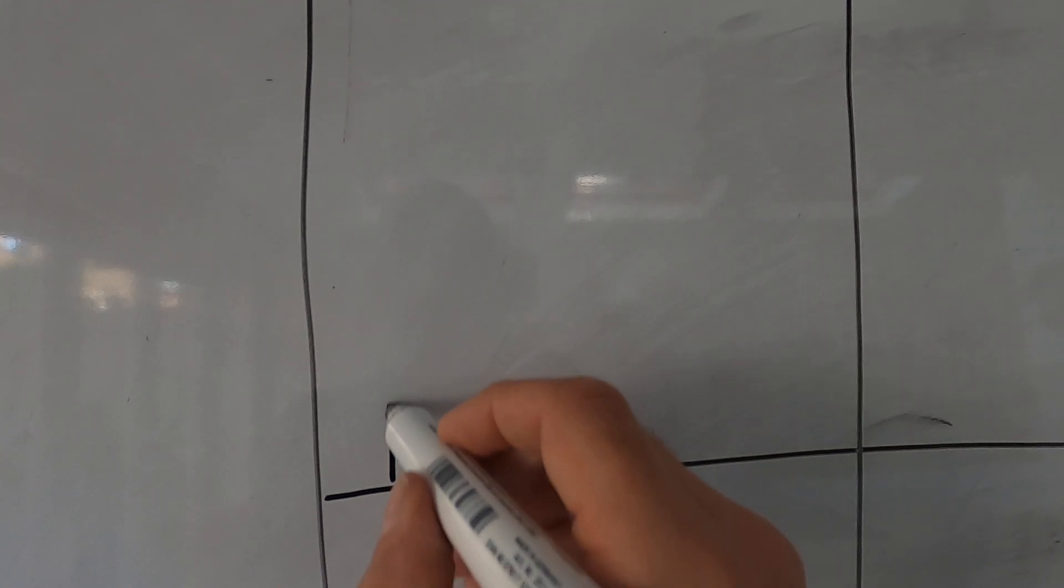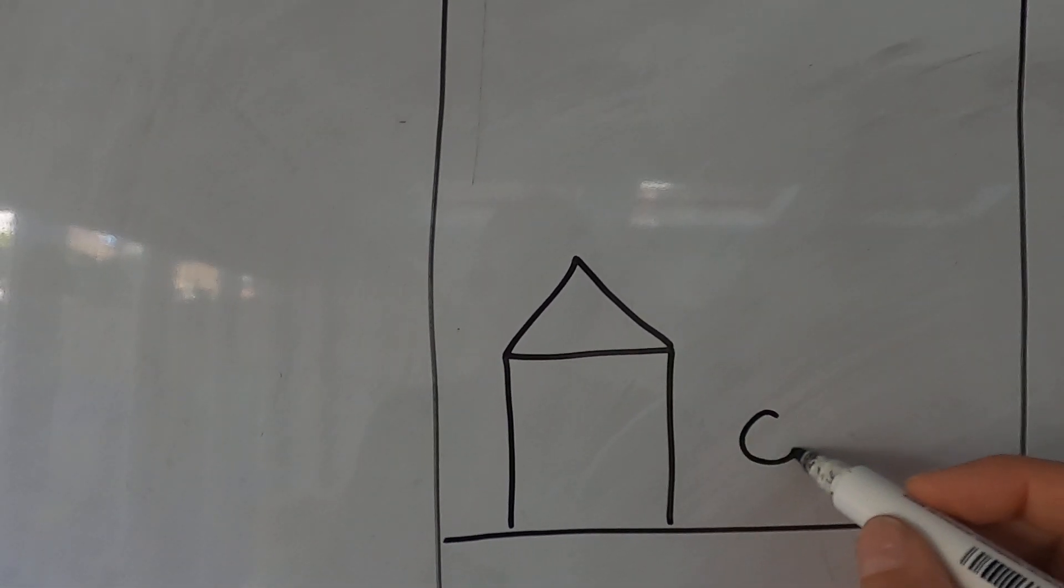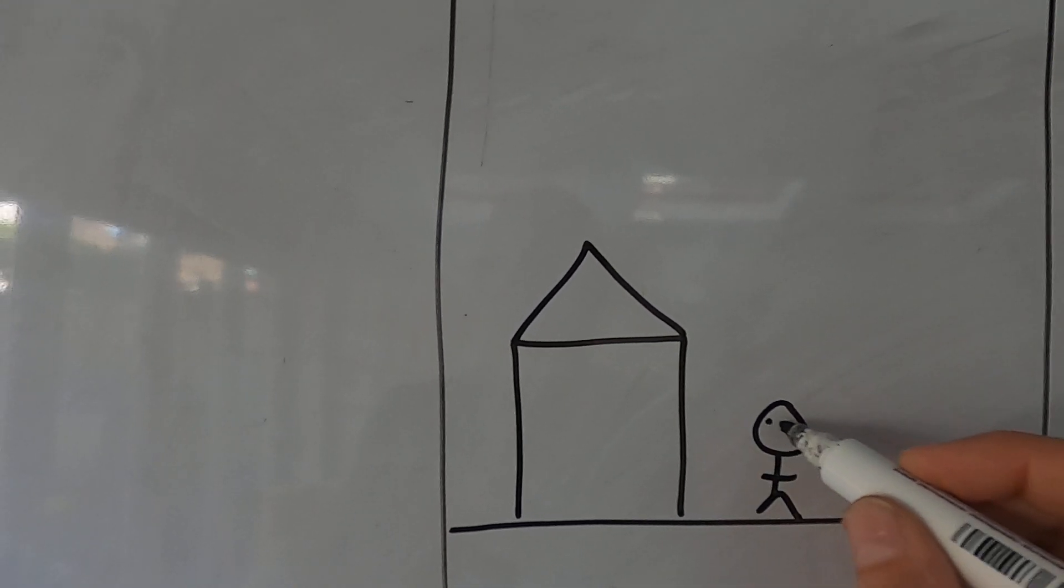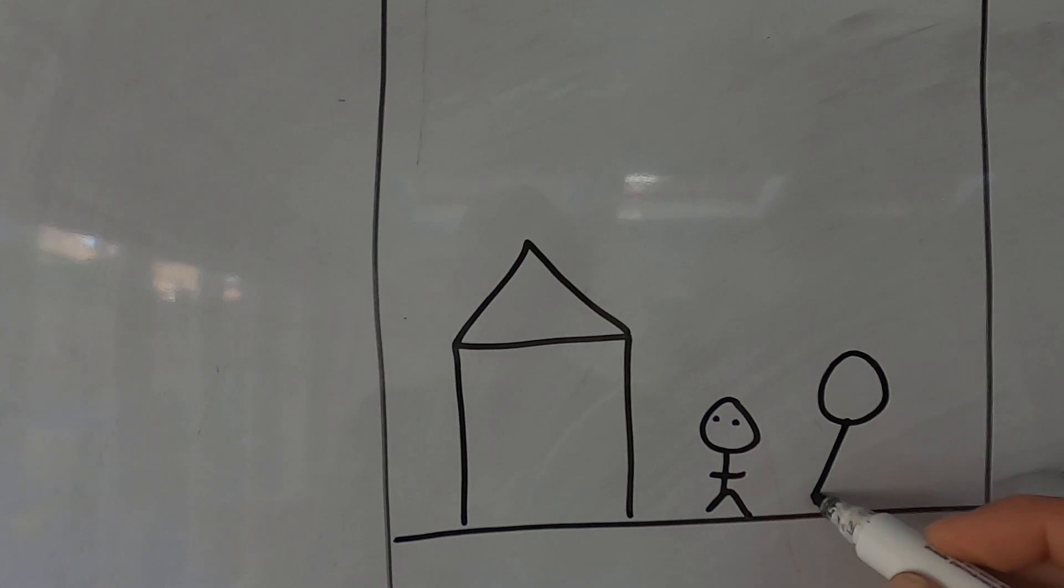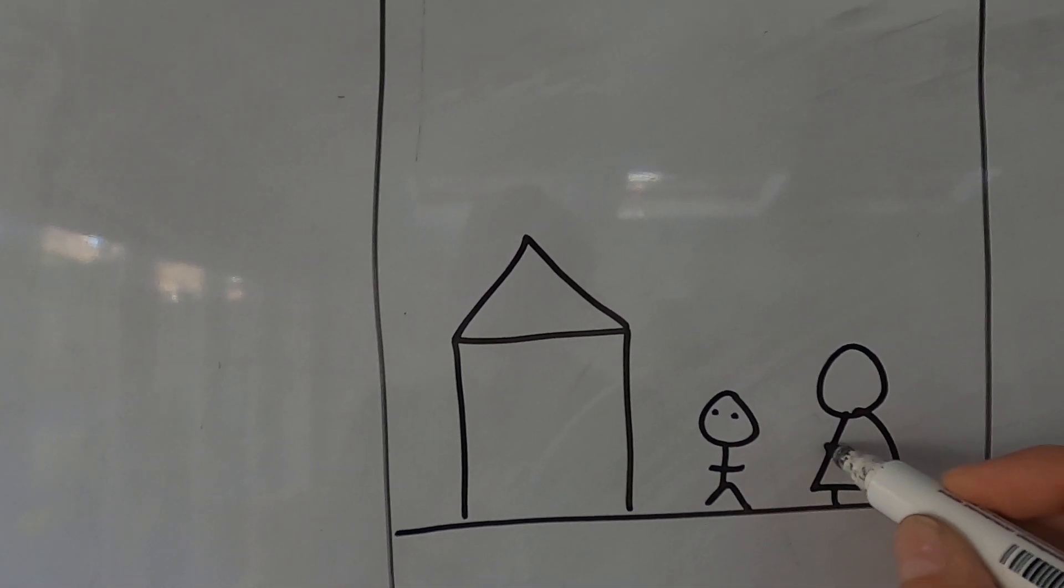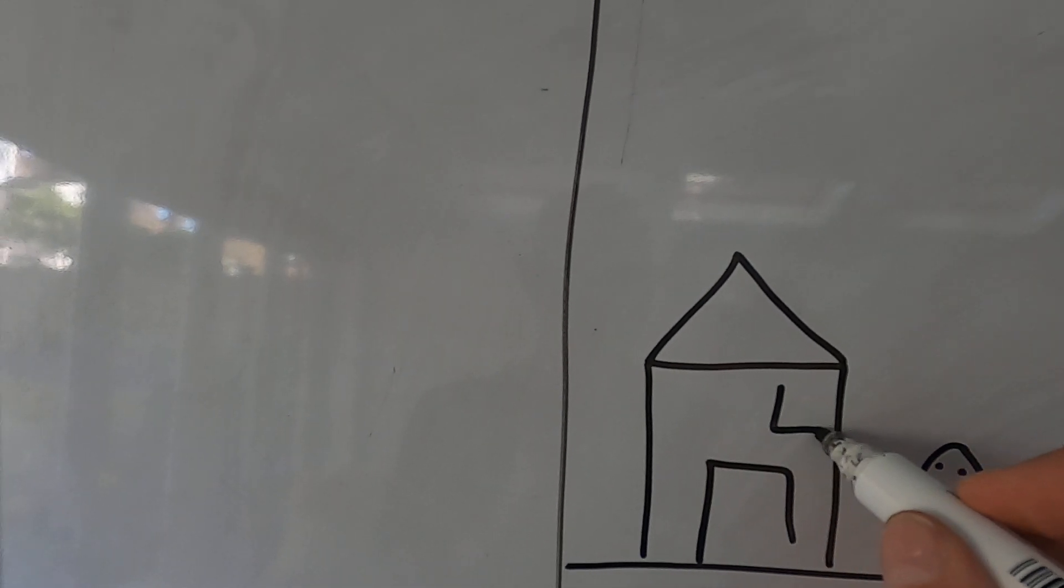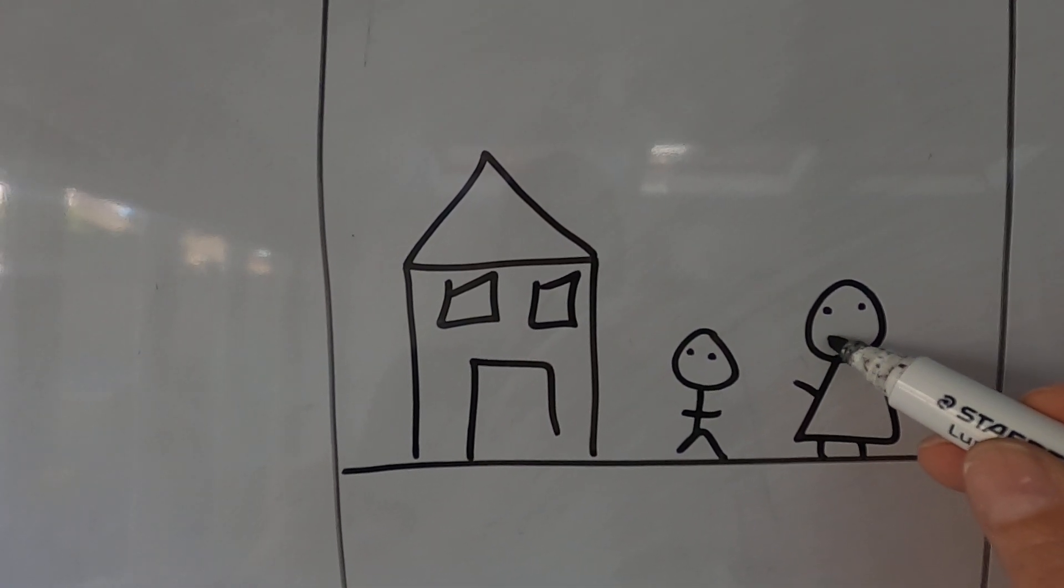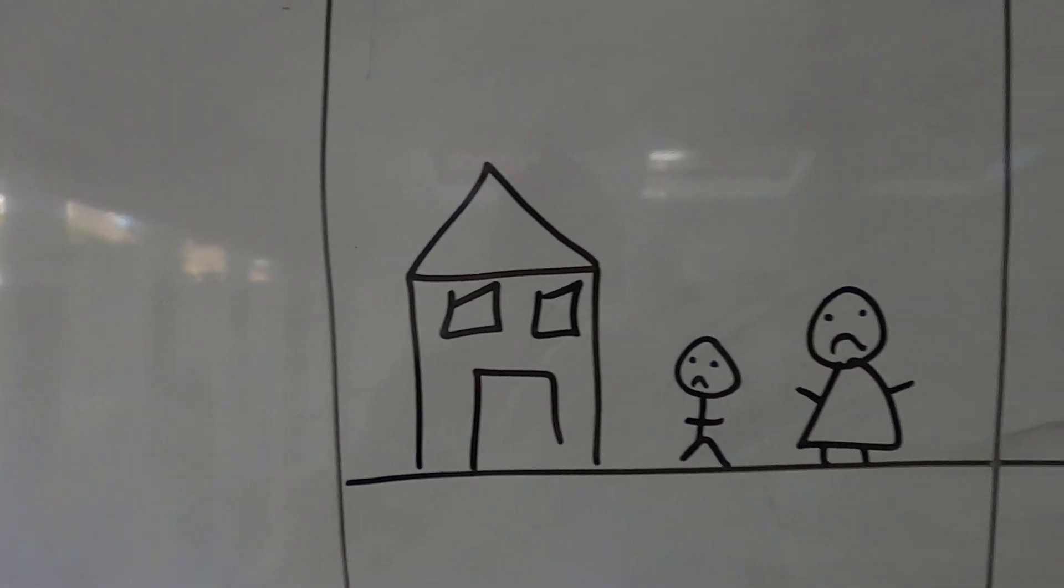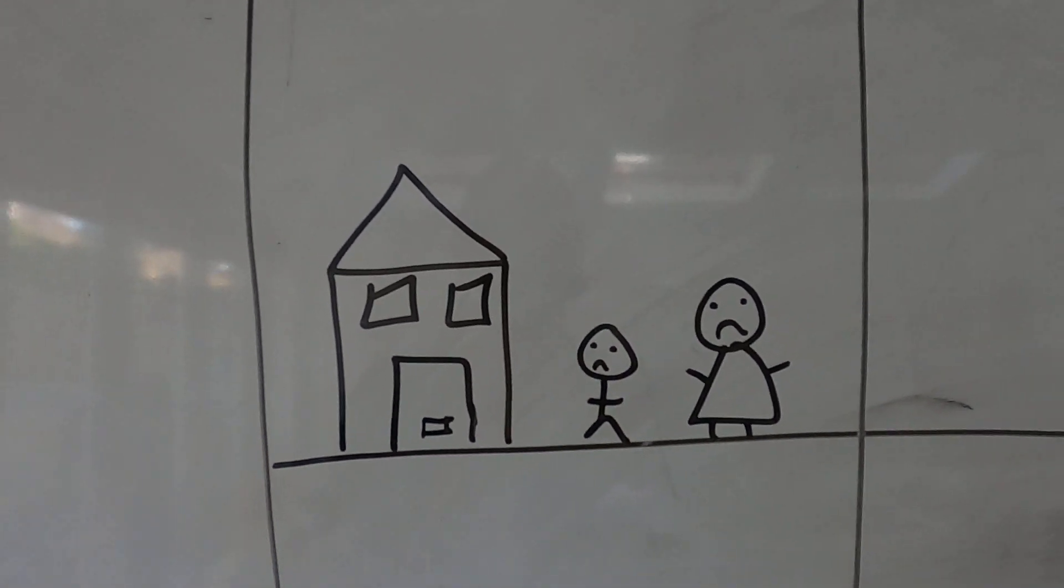So once upon a time there was a house and there lived a boy called Jack and his mum. Now they were sad because they were hungry and poor and didn't have anything to eat.